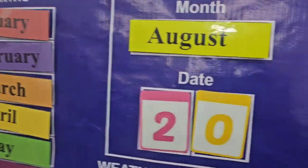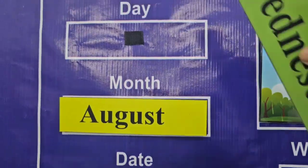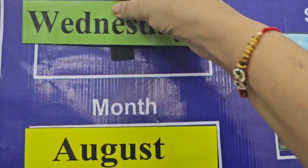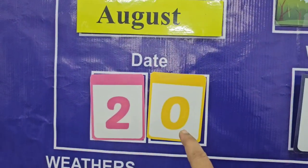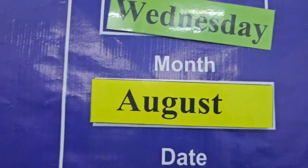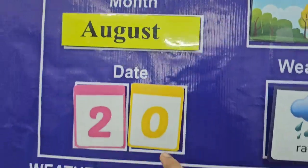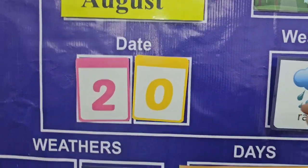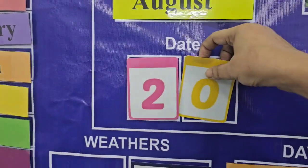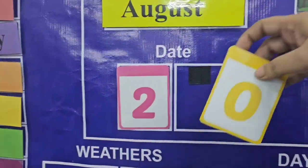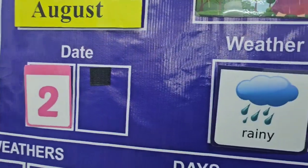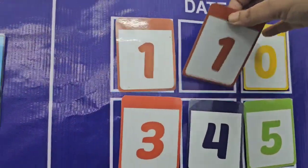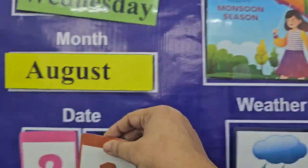What day is today? Today is Wednesday. What's the month of the year? August is the current month. What's the date today? The date is the 21st. Let's put the 21st date on the calendar.